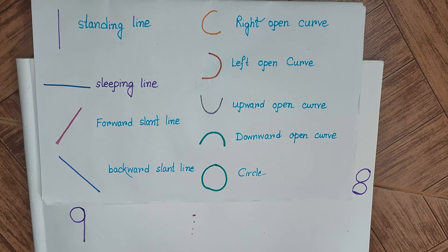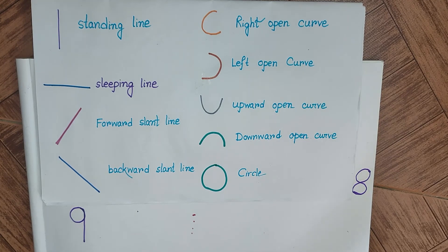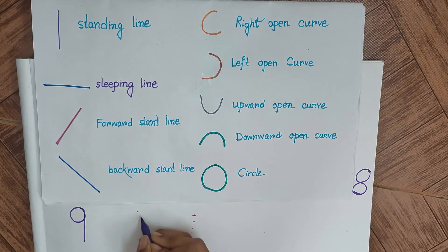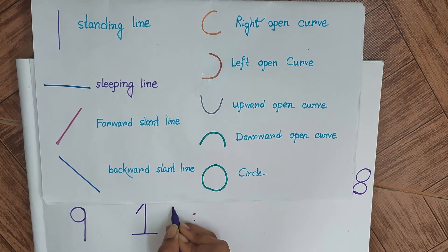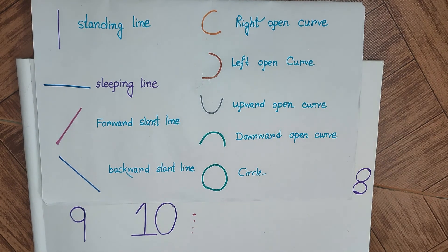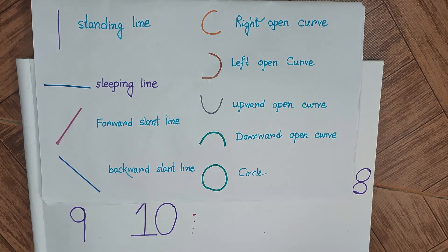Let us see how we will do number 10. Number 10 is very easy because it will be using 1. We have a forward slanting line followed by a standing line and a slipping line at the bottom, which gives us 1, and for the 0, we can just use a circle. In this way, we have completed from 1 to 10 and showed you how children can start writing or practicing writing 1 to 10 using different lines, shapes, and circles.